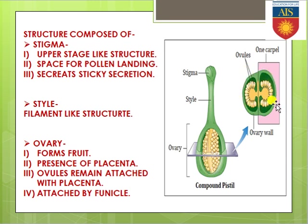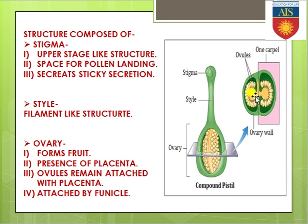In the diagram you can see the entire ovary is subdivided into two chambers, with ovules arranged in a flower-like manner inside. In the middle there is a partition wall called the placenta, from where the ovules remain attached by the help of the funicle. This is the overall structure of the pistil or carpel.